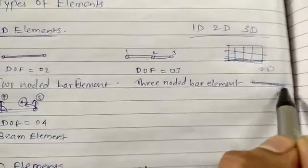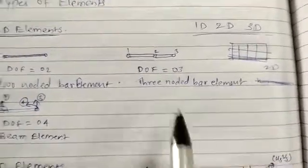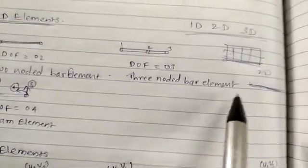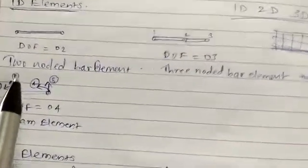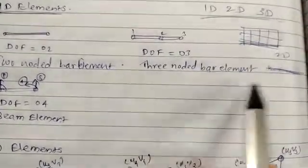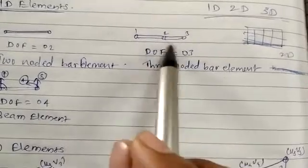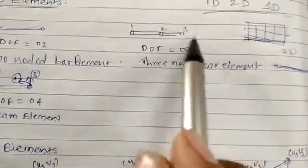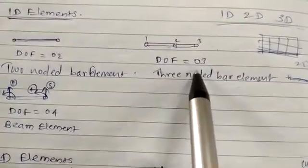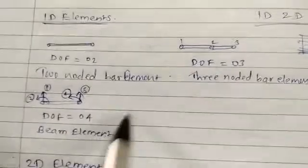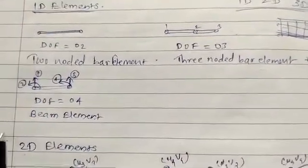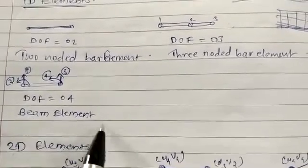When you are dividing a single line element into a number of small elements, you will use bar elements. This is the three-noded bar element — the first one was a two-noded bar element. I have shown the three-noded bar element with nodes one, two, and three, and it has a degree of freedom equal to three. The third example under one-dimensional elements is the beam element, which has two nodes and a degree of freedom of four.